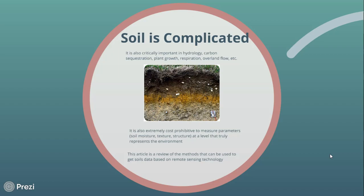However, it's really cost-prohibitive to measure parameters like soil moisture, texture, and structure at a level to truly represent the environment. You also can't really see what's going on beneath your feet, because these horizons that are pictured in this picture go in and out — some of them are there and some of them aren't — and that differs based on where you are in the landscape.